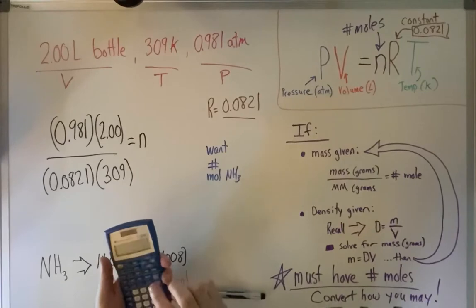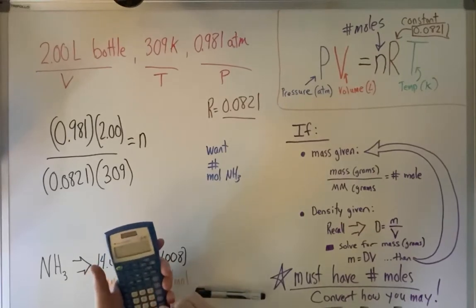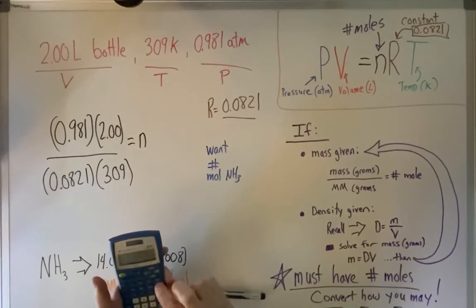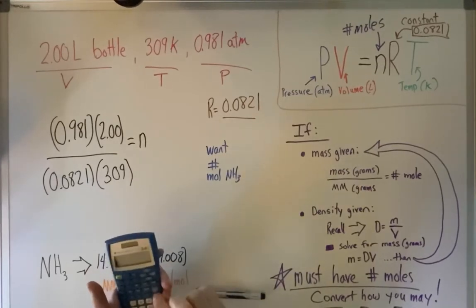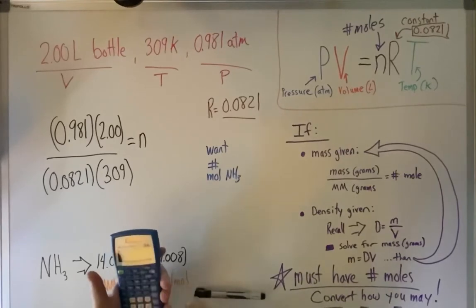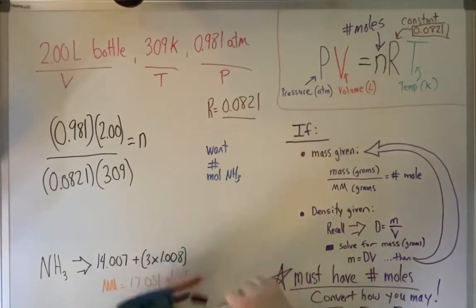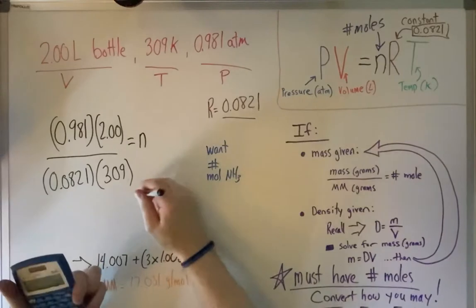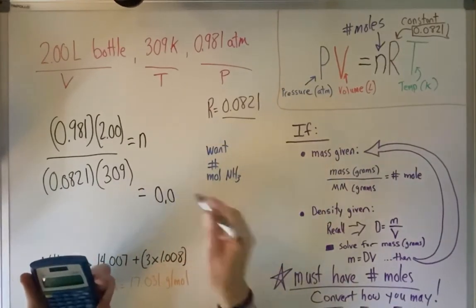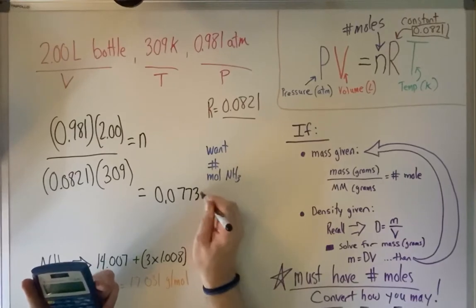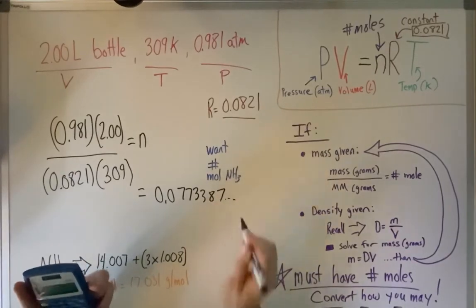So we go ahead and put it on our calculator. Once again, remember, you have to do the PEMDAS for it. So parentheses 0.981 times 2, parentheses, divide, parentheses, 0.0821 times 309, parentheses.